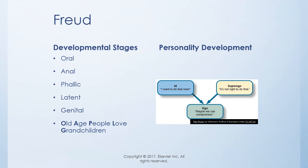The superego is where we develop internalized experiences; it's a more unconscious area of the mind and helps us decide right from wrong. For example, if someone cuts you off in traffic, your id says run them over, your ego uses reality testing to say you can't do that, and your superego adds the moral compass — it's simply not right. All three work together in our personalities.